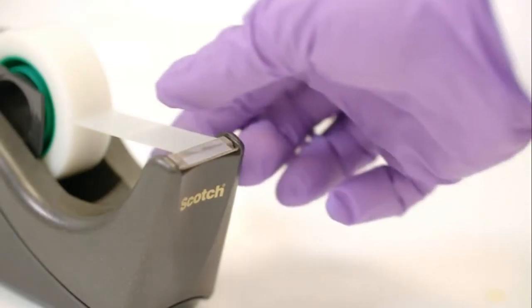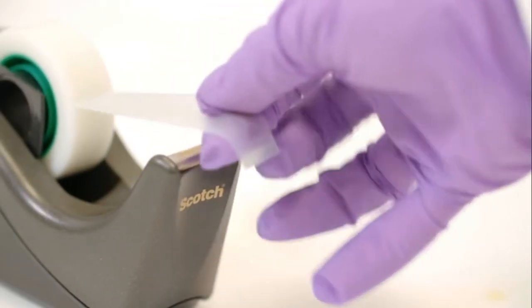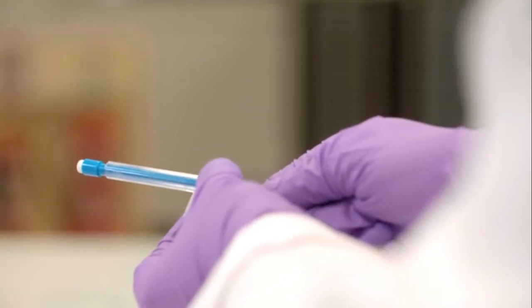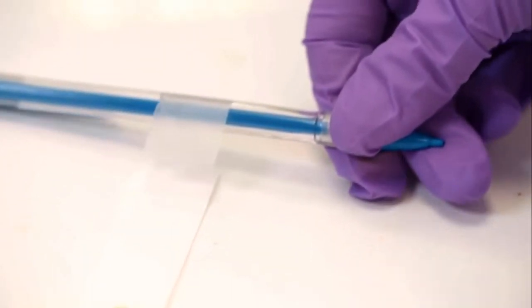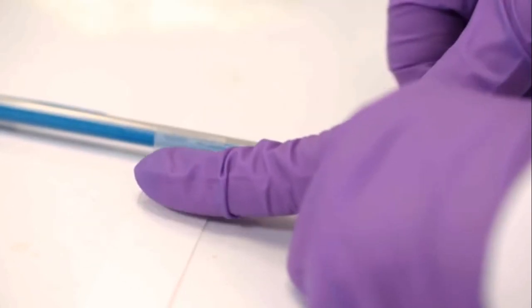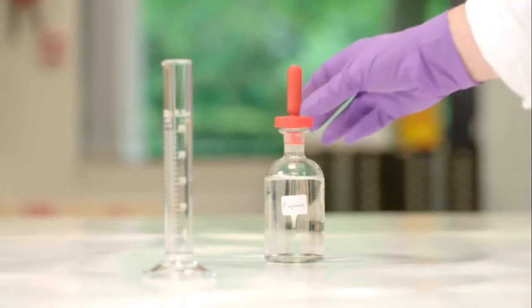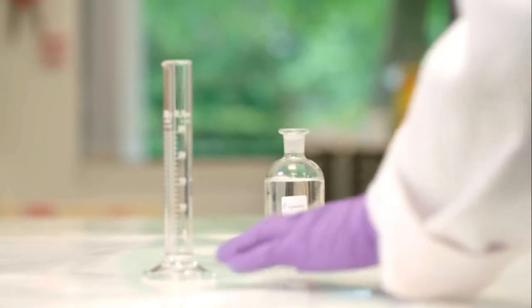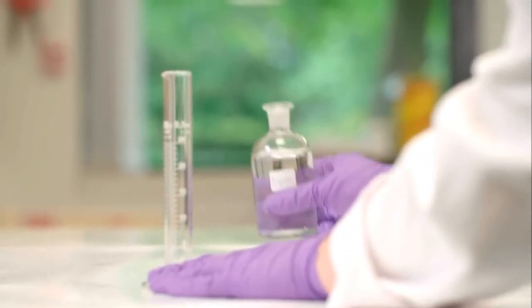Now the paper is attached to a pencil using sticky tape. 20cm³ of propanone is measured out using a measuring cylinder and poured into a large beaker.